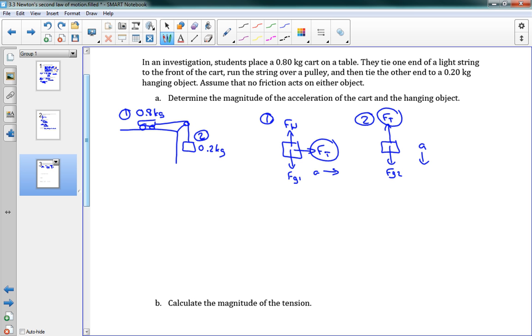And the magic of this solution is going to be using the fact that the tension is the same in both of these objects. That's very important, that when you have a string, the tension throughout is going to be the same. So the tension here and the tension here will be the same.